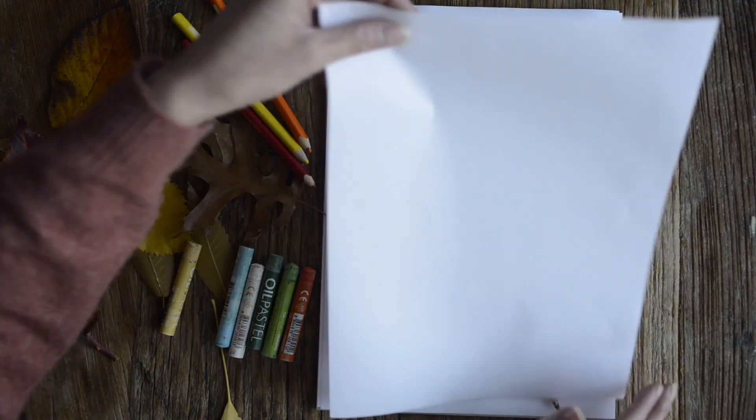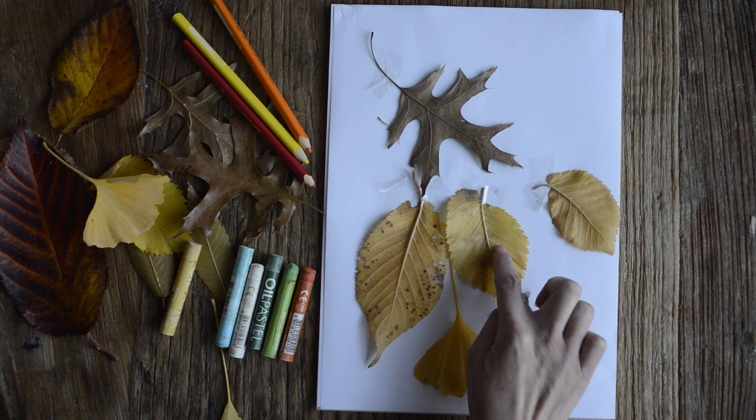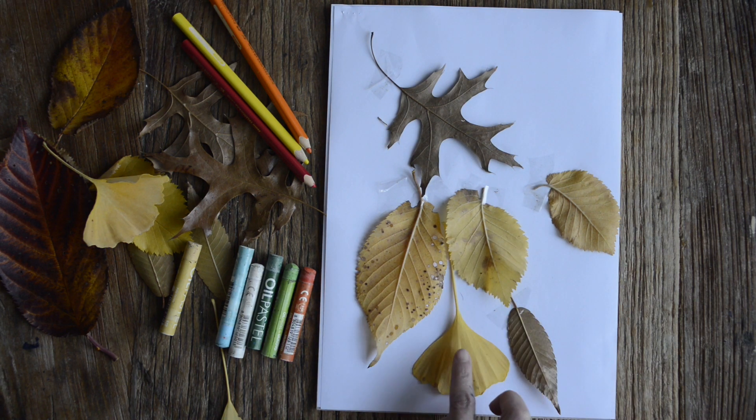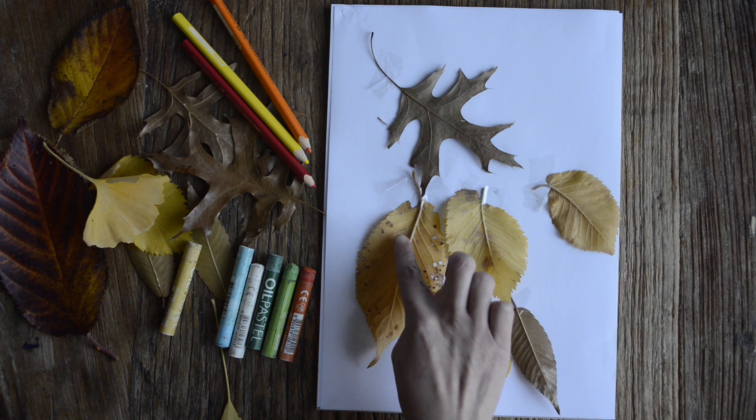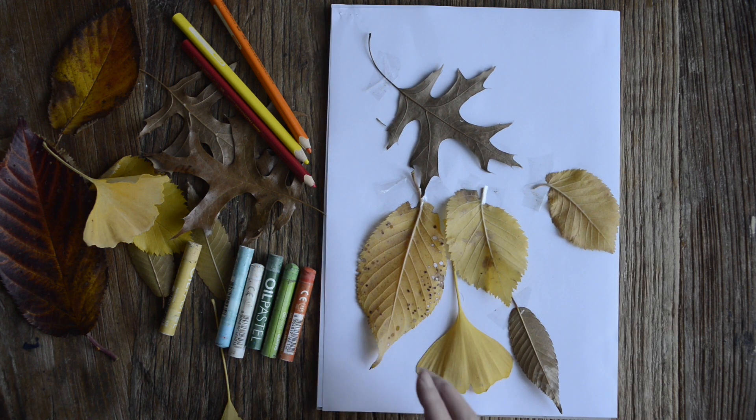Now, when you stick your leaves on, you want the veiny parts or the parts that are a little bit bumpy on top, so that when you rub your pencil over it, it's going to create an imprint.